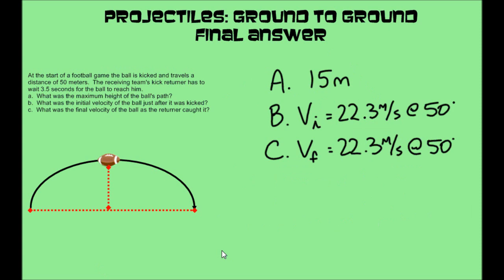Here are the final answers. Letter A — the maximum height of the ball's path — is 15 meters. Letters B and C were both the same answer: the initial velocity and the final velocity are equal in these problems. So vi and vf are both 22.3 meters per second at 50 degrees.